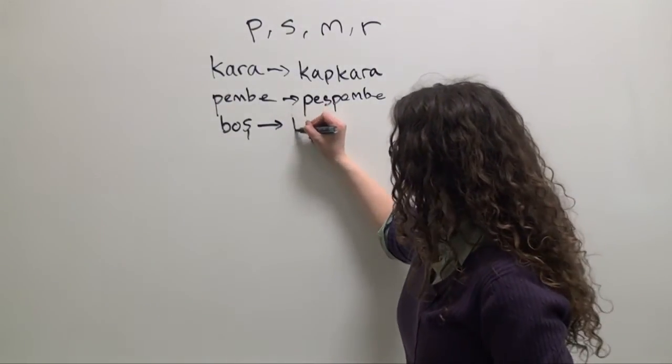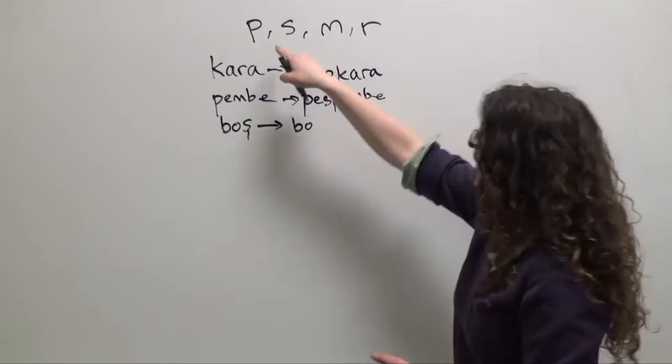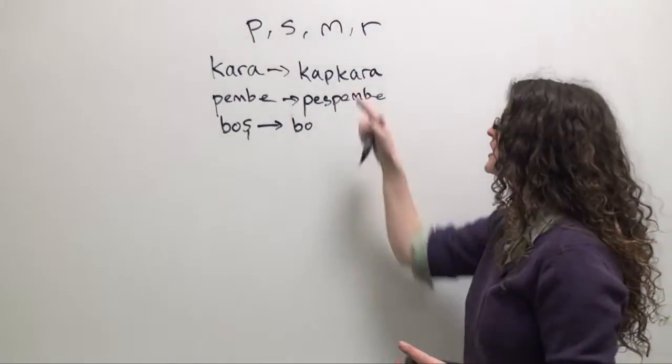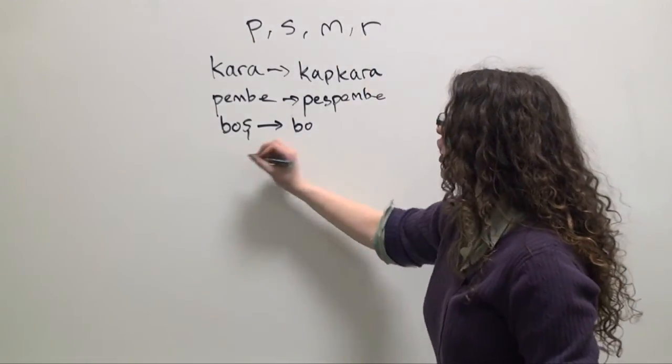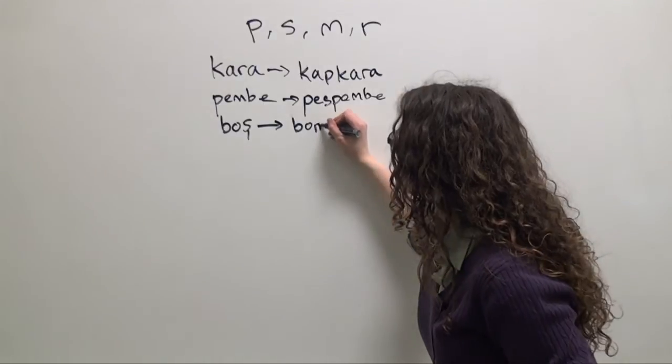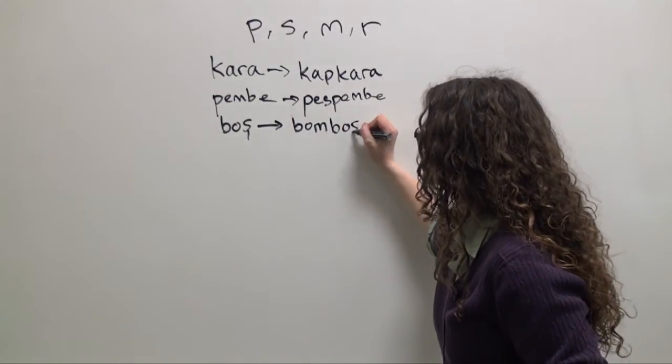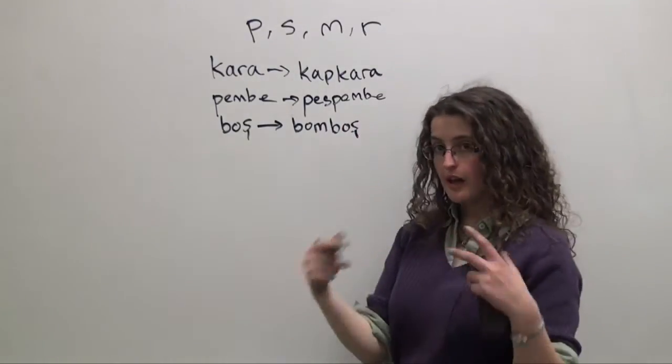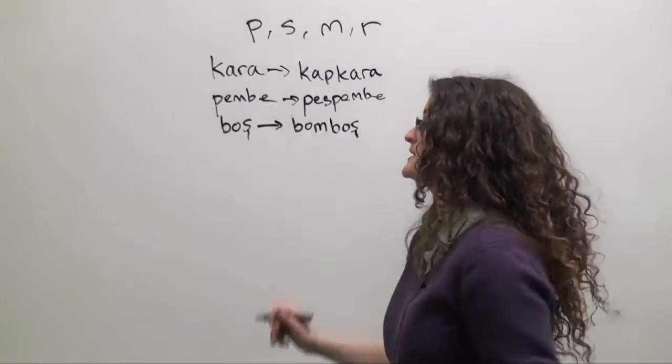We can repeat the first syllable, bo, add one of these four consonants. We're going to use M, so extremely empty, bomboş. Boş, empty, bomboş, totally empty.